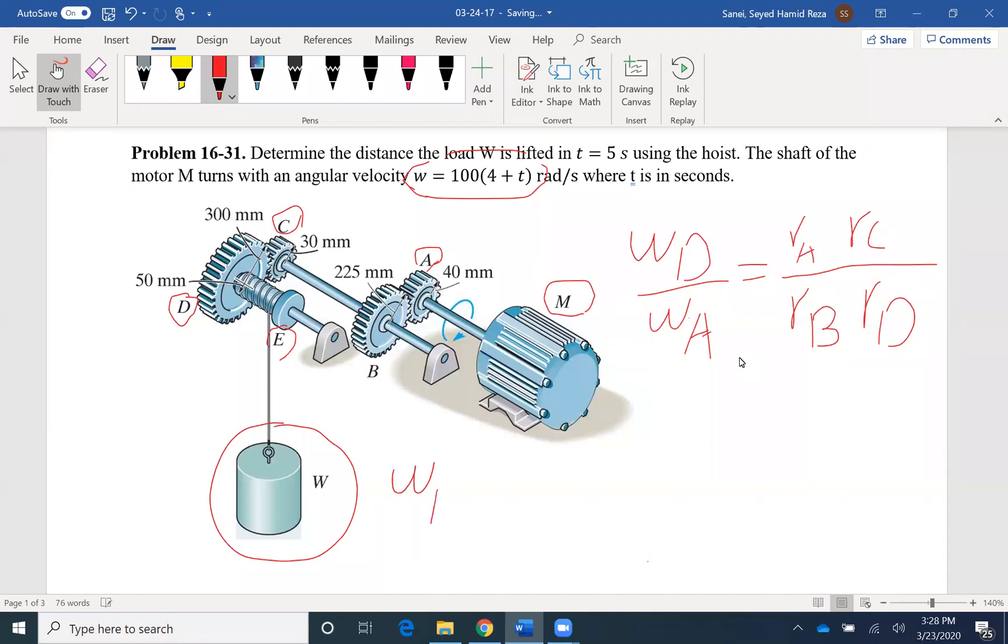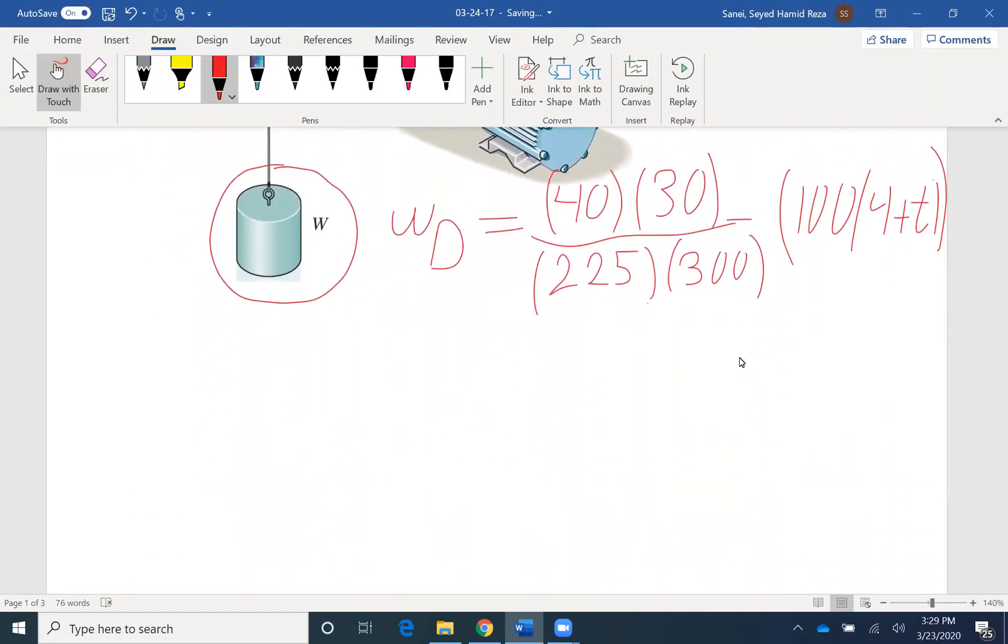In the denominator we have R_B times R_D. So here I can write omega D would be R_A, 40, times R_C, which is 30 millimeter. I'm not going to change the units because they're going to cancel out. R_B is 225 and R_D is 300, times omega A. Omega A is 104 plus T. After multiplication, I can find that omega D would be 1.78, 4 plus T.